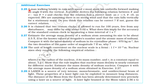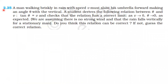From units and measurement, let us solve problems from additional exercises. Problem 2.25: A man walking briskly in rain with speed v must slant his umbrella forward, making an angle theta with the vertical. A student derives the following relation between theta and v.